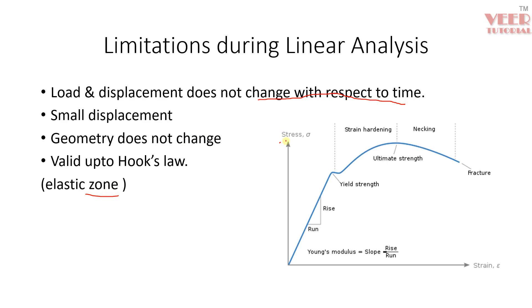Consider the stress-strain curve for steel material: the elastic zone is the straight-line portion. All stress and strain formulas are valid within this elastic zone — this is Hooke's Law, which defines the relation between stress and strain. If we go beyond this elastic zone for complex analysis, we must also consider the inelastic or plastic zone.